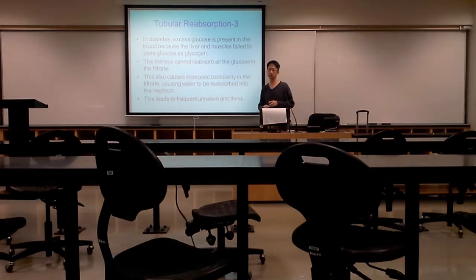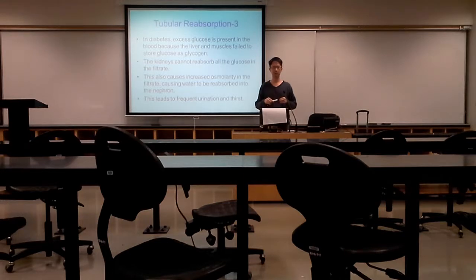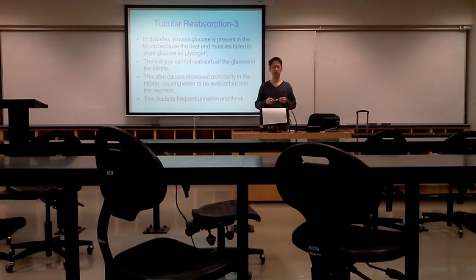Diabetes is mainly because your liver or your muscle cannot store glucose as glycogen. One reason is that the beta cells in your pancreas cannot produce insulin. When your body does not have insulin, your liver and muscle cannot convert glucose into glycogen. Then you have glucose freely flowing in your blood, and you have a high blood glucose level — we call this hyperglycemia.